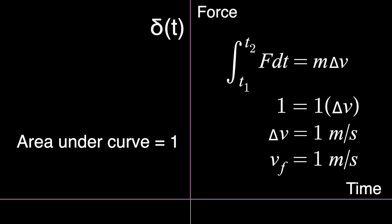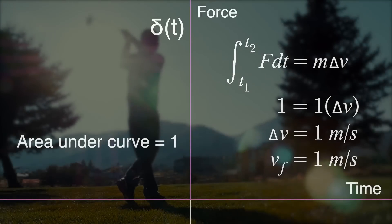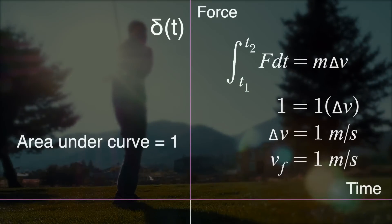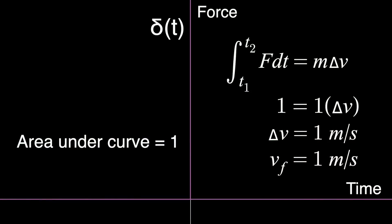And one meter per second is not that fast, so it might not seem fair to model the force on a golf ball with this function, since those are kicked to a velocity of maybe 75 meters per second. But all we have to do is multiply the function by 75. And there we go. This function pretty much models the actual force delivered by a golf club.